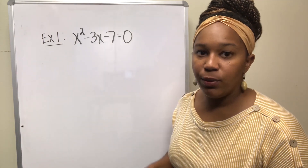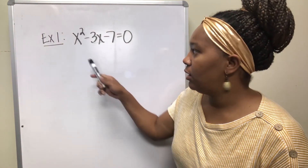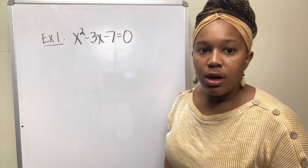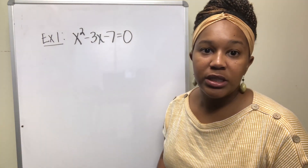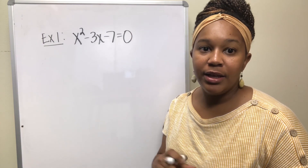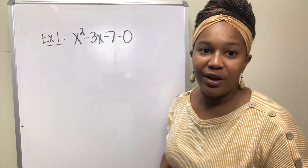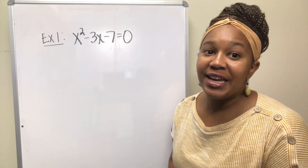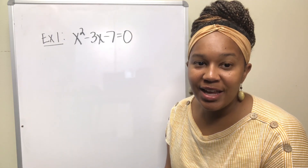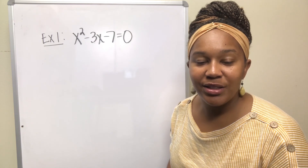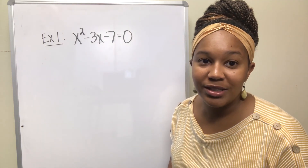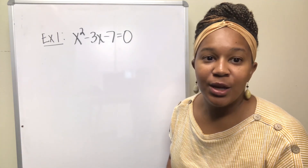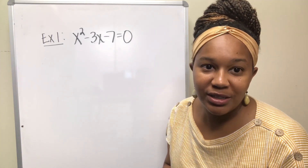In our first example, we're gonna use the quadratic formula to solve x squared minus 3x minus 7 equals zero. Once you know the formula, the rest is just plugging in and simplifying — the biggest part is knowing the formula, which is why I like to sing it. Because I cannot write as fast as I can sing, I have to chop and screw the song. I live in Houston, Texas, home of the chop and screw — if you don't know what that is, Google it.